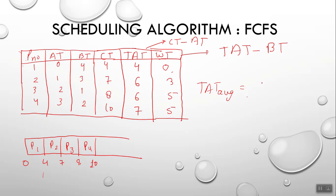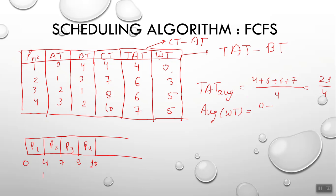Now calculate the average turnaround time: (4 + 6 + 6 + 7) / 4 = 23 / 4. The average waiting time is (0 + 3 + 5 + 5) / 4 = 13 / 4. That's how you calculate these values.